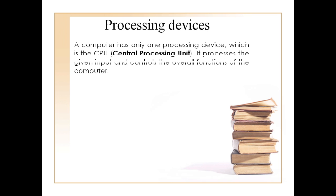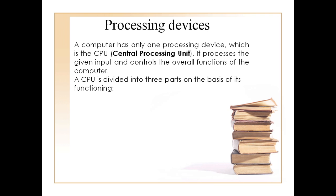Now we come to the second category of computer devices — processing devices. The CPU is the only processing device in a computer. CPU stands for Central Processing Unit. The CPU is also known as the brain of a computer. It controls the input and output devices attached to a computer. It processes the given input and provides the accurate output accordingly.